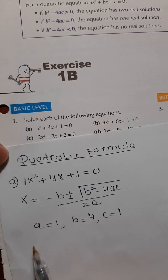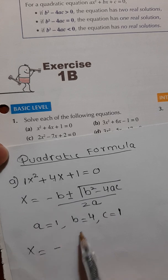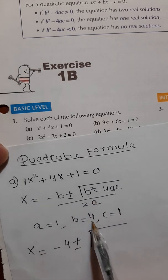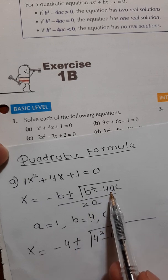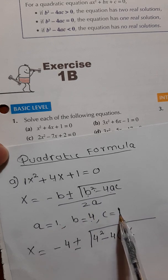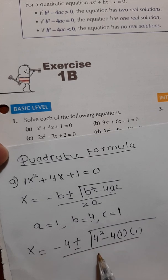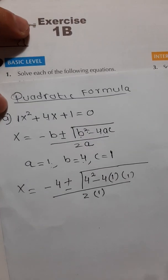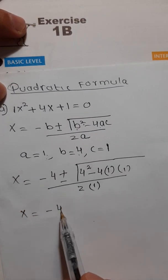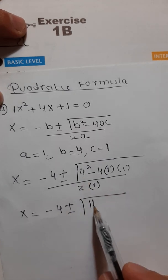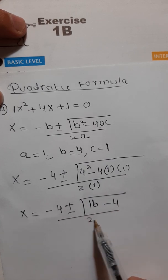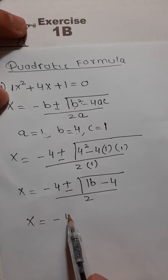Using the values of a, b, and c in the formula: x equals minus b, which is minus 4, plus or minus square root of b² which is 4², minus 4 times a (which is 1) times c (which is 1), divided by 2 times a which is 1. So x equals minus 4 plus or minus square root of 16 minus 4, over 2. That gives x equals minus 4 plus or minus square root of 12, over 2.